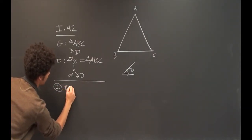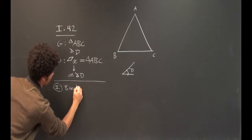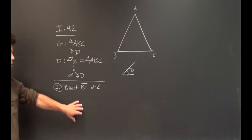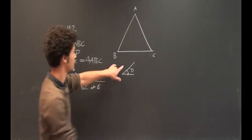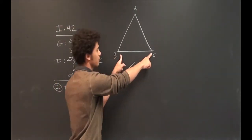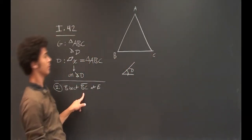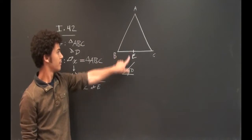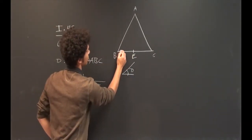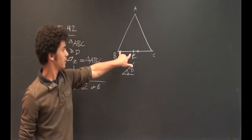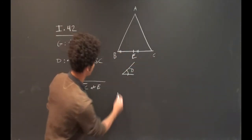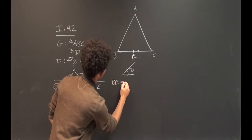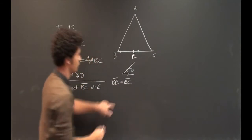Our first step is to bisect BC at E. We take the base of our triangle BC and bisect it at point E. These two lines BE and EC are equal to each other — we're going to need this later.